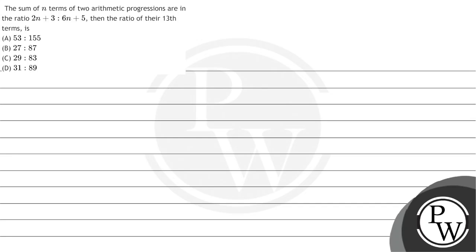Hello, let's read the question first. The question says: the sum of n terms of 2 arithmetic progressions are in the ratio (2n + 3) : (6n + 5). Then the ratio of their 13th terms is — options: 53:155, 27:87, 29:83, or 31:89.